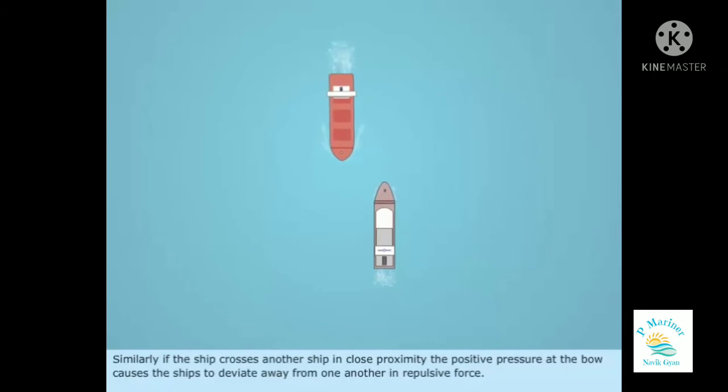Similarly, if the ship crosses another ship in close proximity, the positive pressure at the bow causes the ships to deviate away from one another in repulsive force.